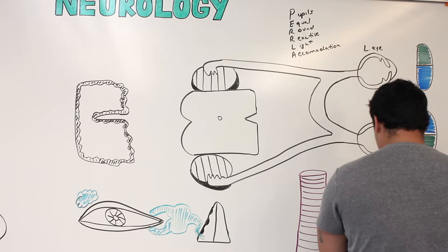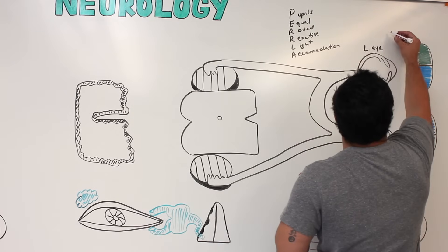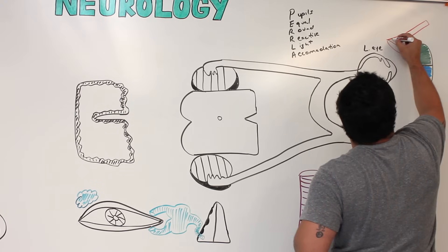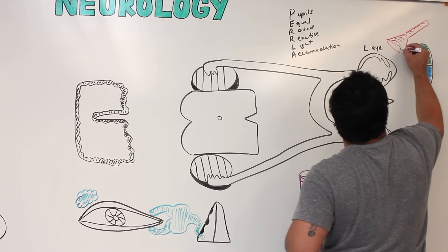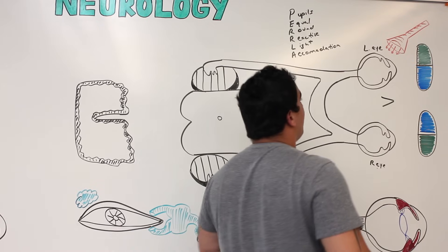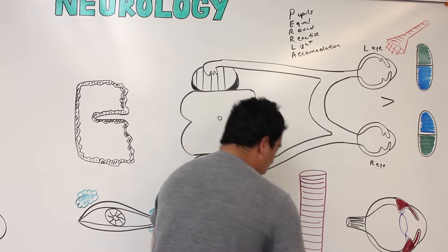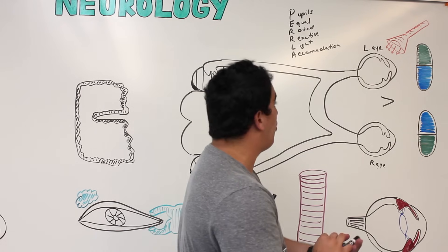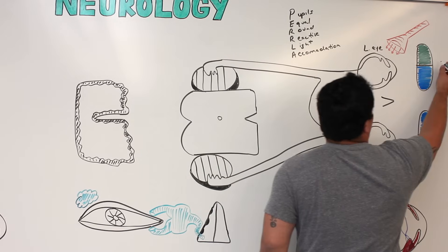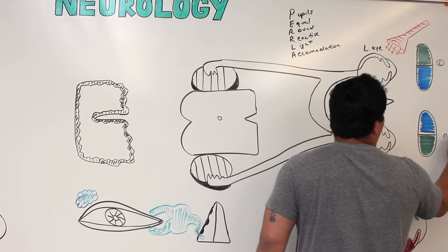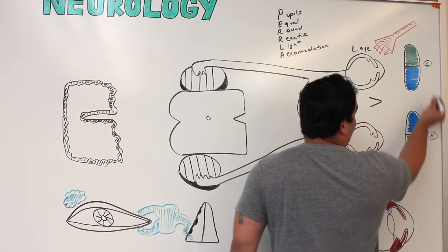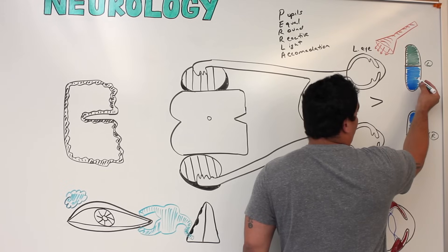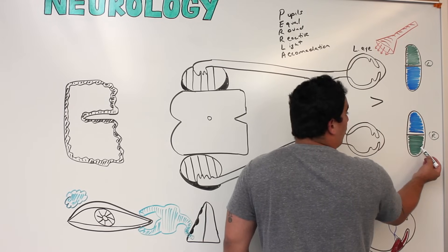If you've already seen our video on visual fields and lesions, you'll understand how this pathway works. The left eye has a nasal hemiretina on the nose side and a temporal hemiretina on the temple side. The same applies to the right eye — nasal hemiretina medially and temporal hemiretina laterally.